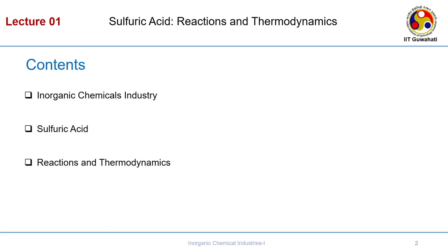We will briefly discuss the inorganic chemical industry. The inorganic chemical industry constitutes ammonia and sulfuric acid — these are the two major inorganic base chemicals from which many other compounds can be manufactured. We focus our attention on sulfuric acid, then talk about the reactions and thermodynamics. I will also take you briefly through its manufacturing history, covering two different processes and their respective advantages and disadvantages.